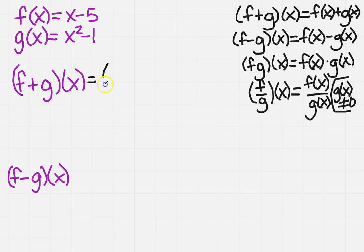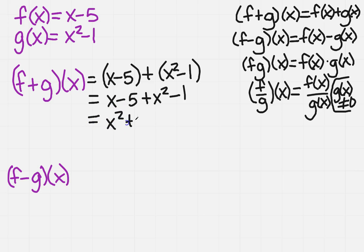That simply means I've got my f of x, which is x minus 5, and I'm going to add to that x squared minus 1. Then I just need to simplify. That would give me x minus 5 plus x squared minus 1. I want to combine like terms, so I'm going to get x squared plus x minus 6.